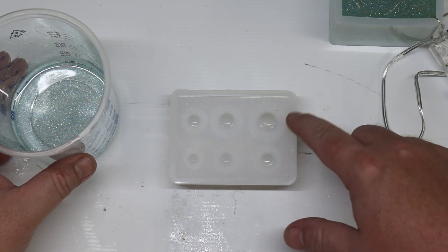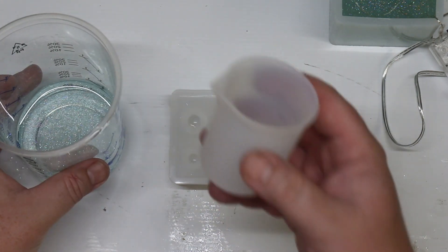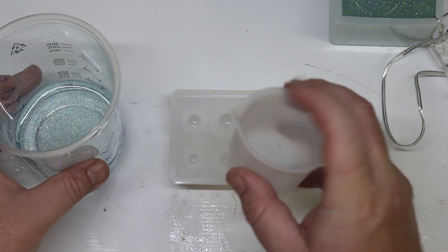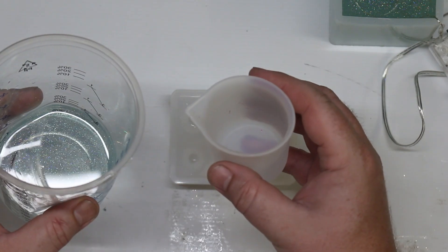Sometimes it can be difficult to pour into these small holes from a big cup like this. So I've got myself a little silicone one and it's got a little spout on here. It makes it really easy to pour into.